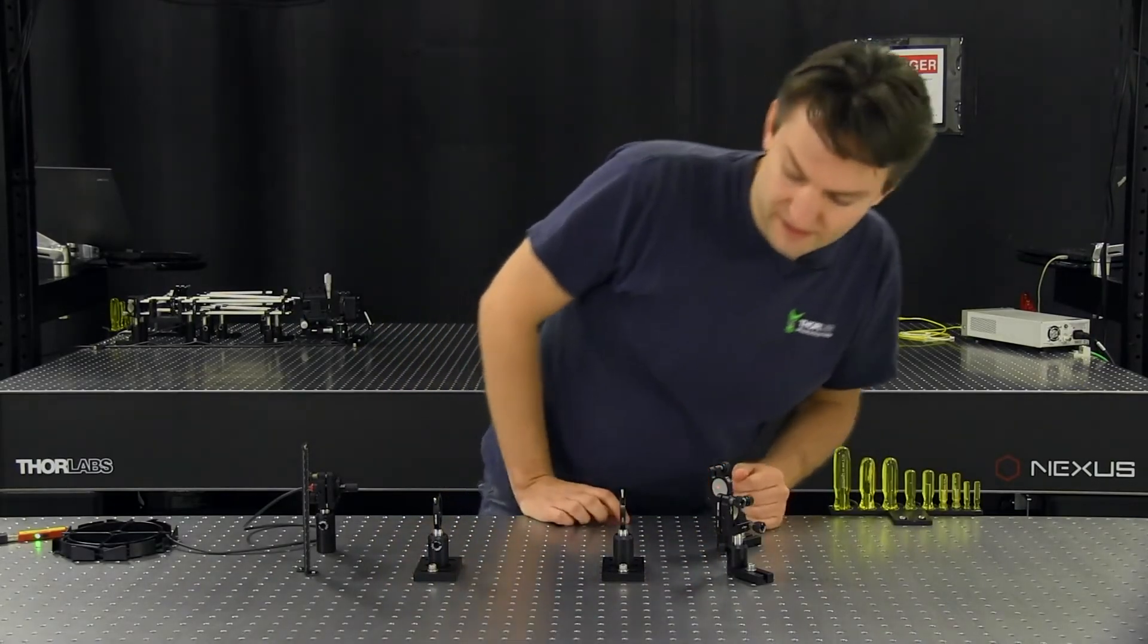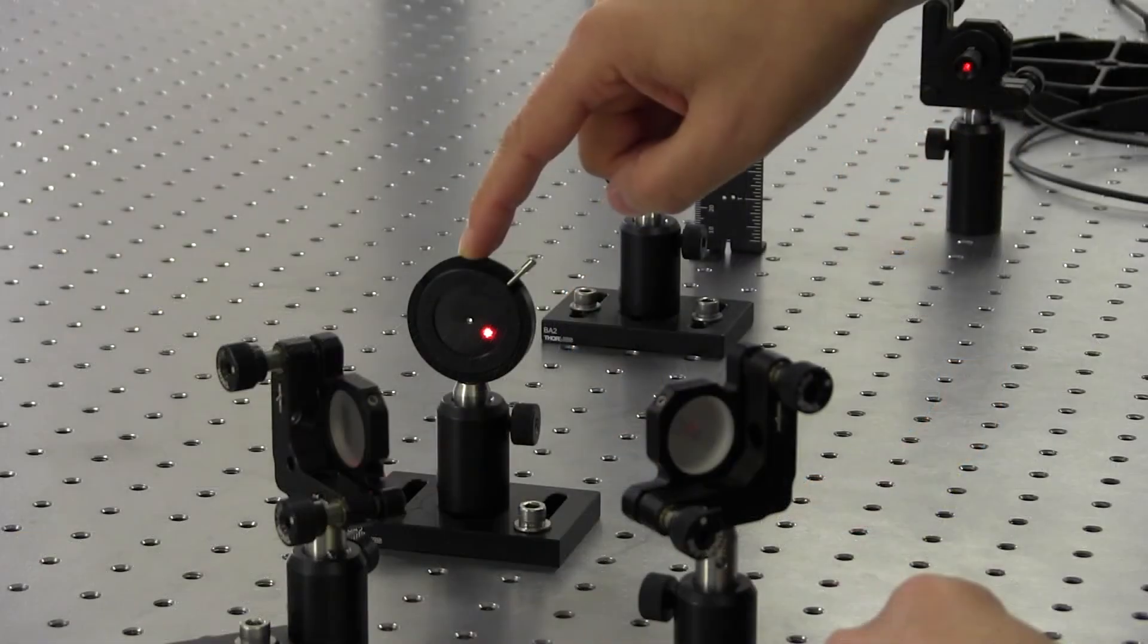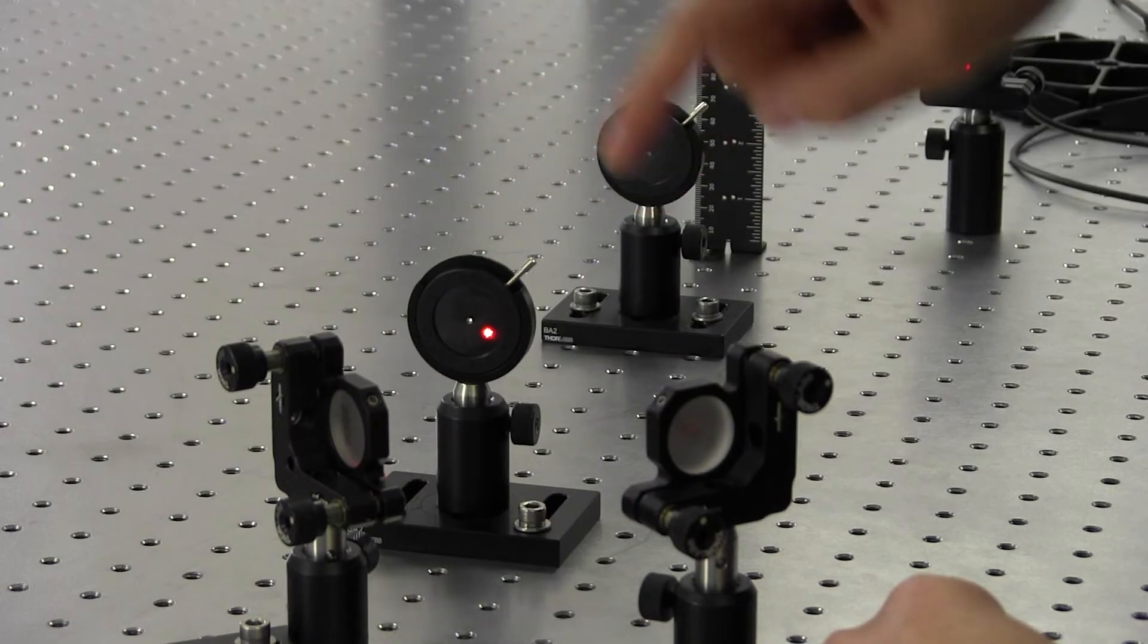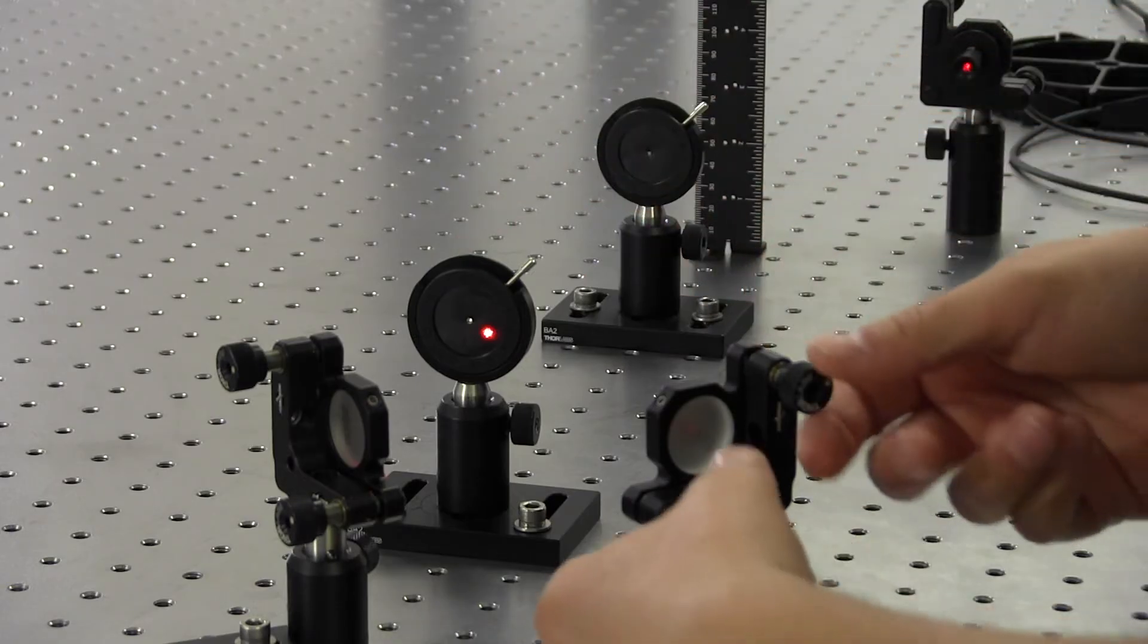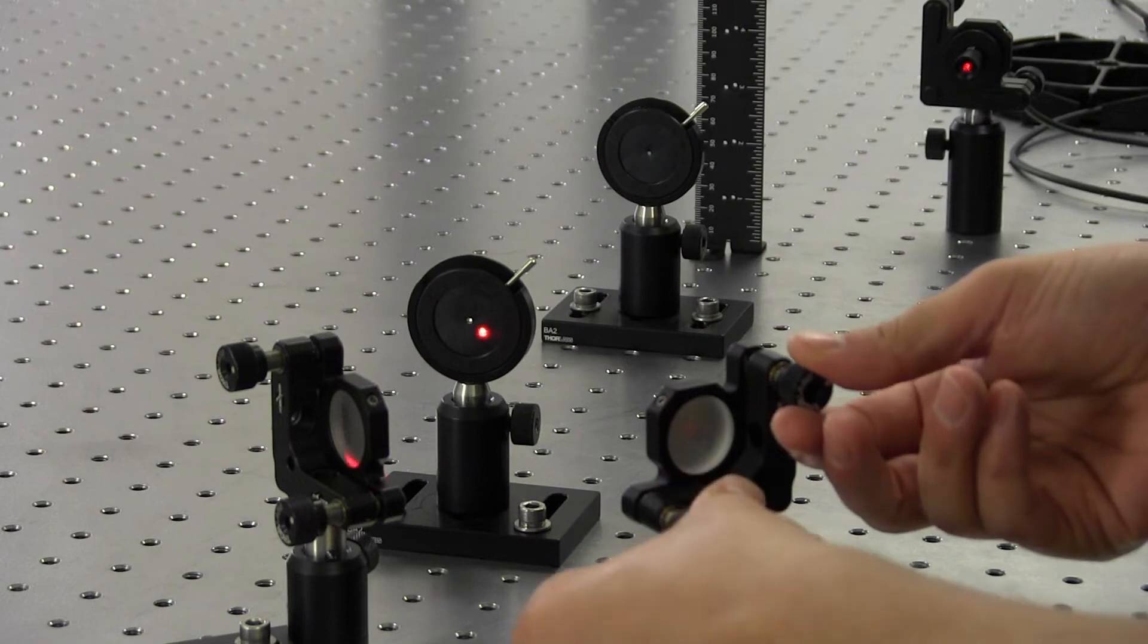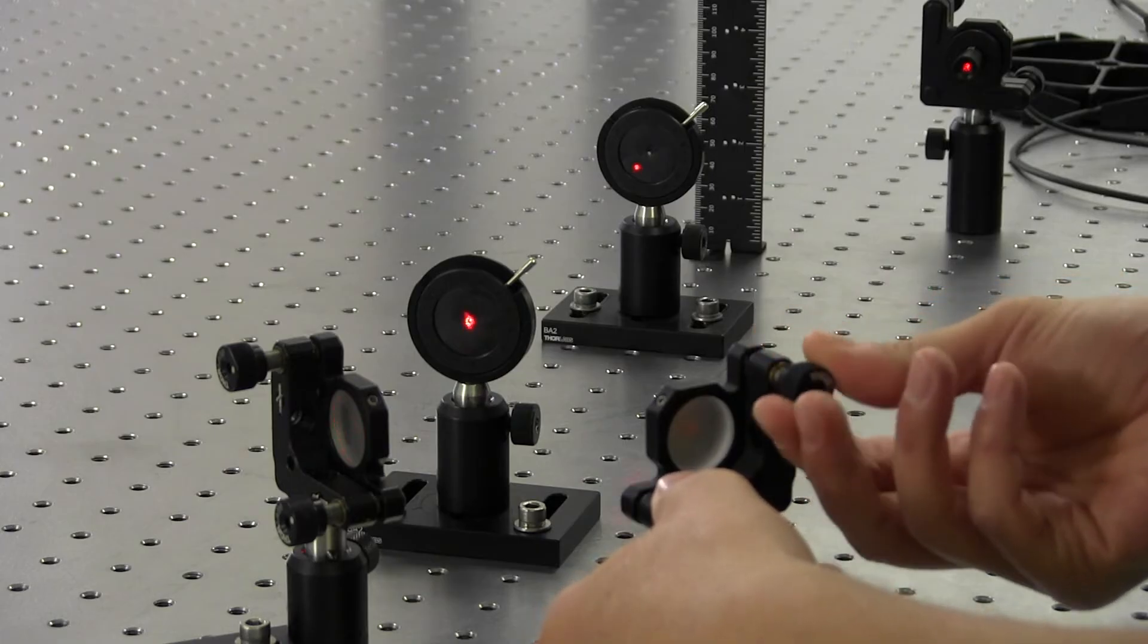So here, I can see, looking at the front face of the iris, I can see that I'm hitting down and to the right. And so I'll use this first mirror mount to move the beam to try to center it on the aperture. And I know I'll be centered when there is a nice halo around the aperture.